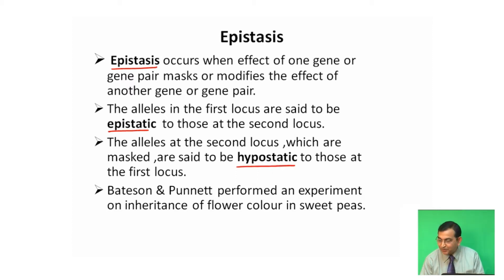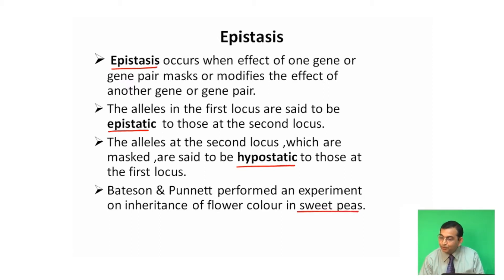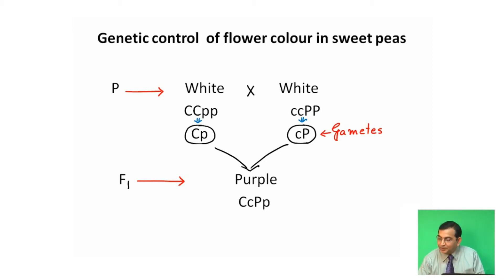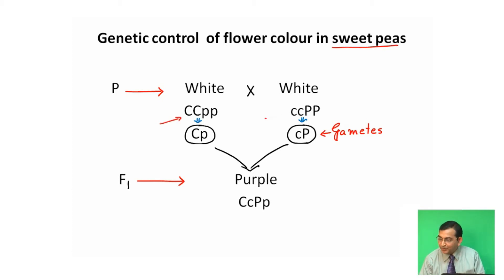Bateson and Cunet performed an experiment on inheritance of flower color in sweet peas. They crossed two white strains of sweet peas: one having CCpp and another with ccPP. In the F1 generation, a purple colored flower was obtained with two dominant genes, capital C and capital P.